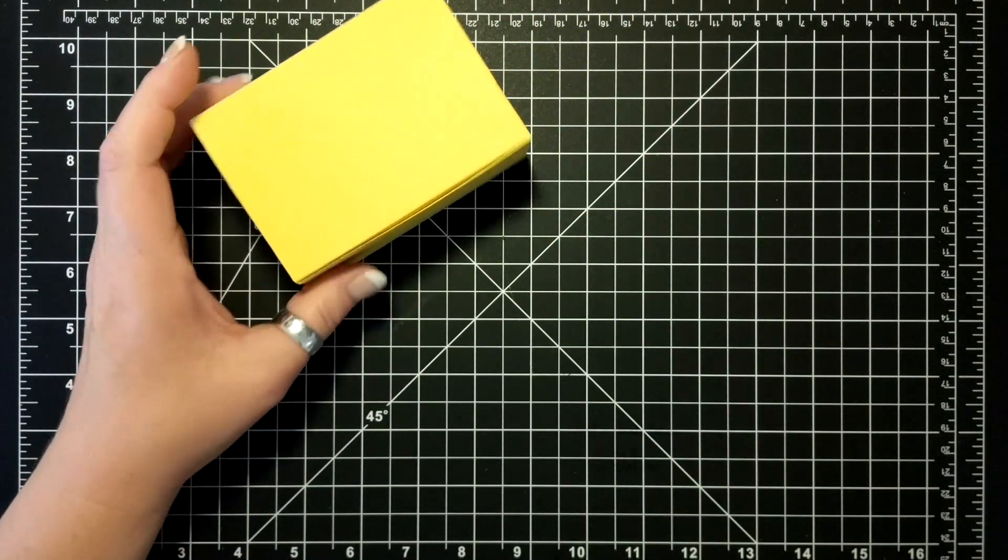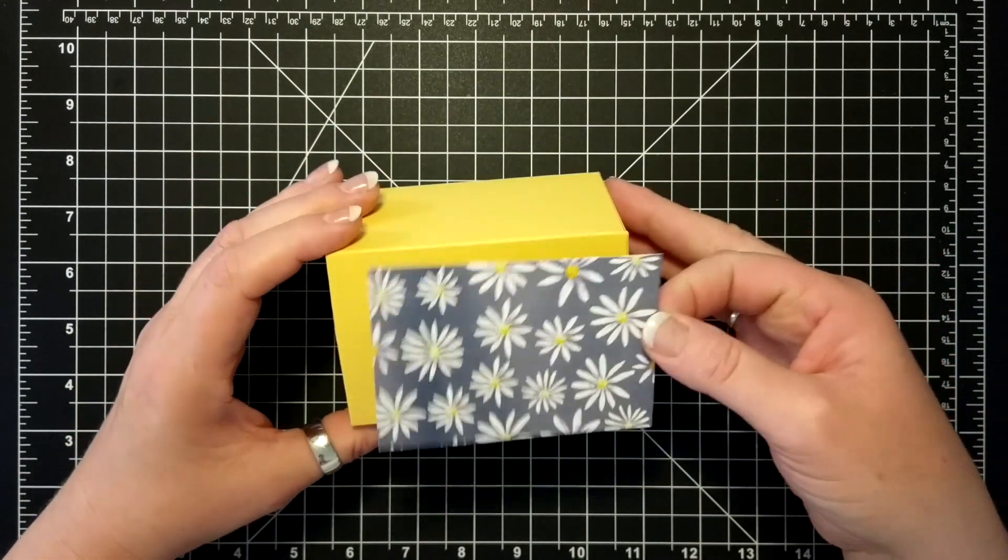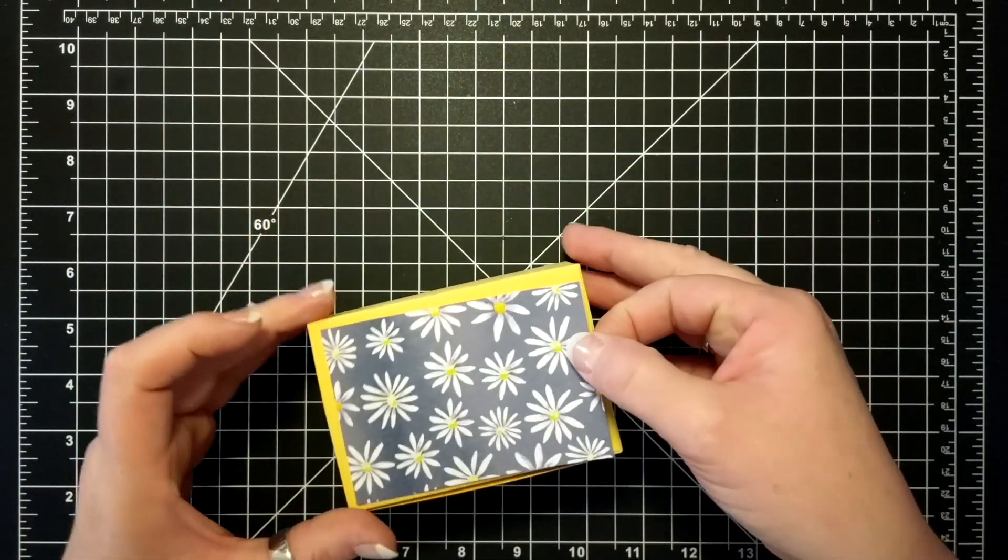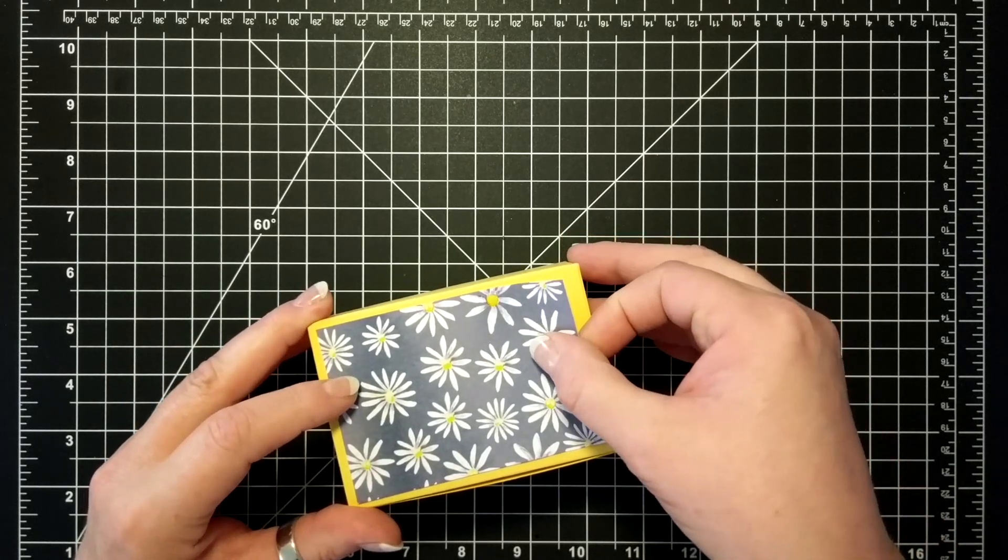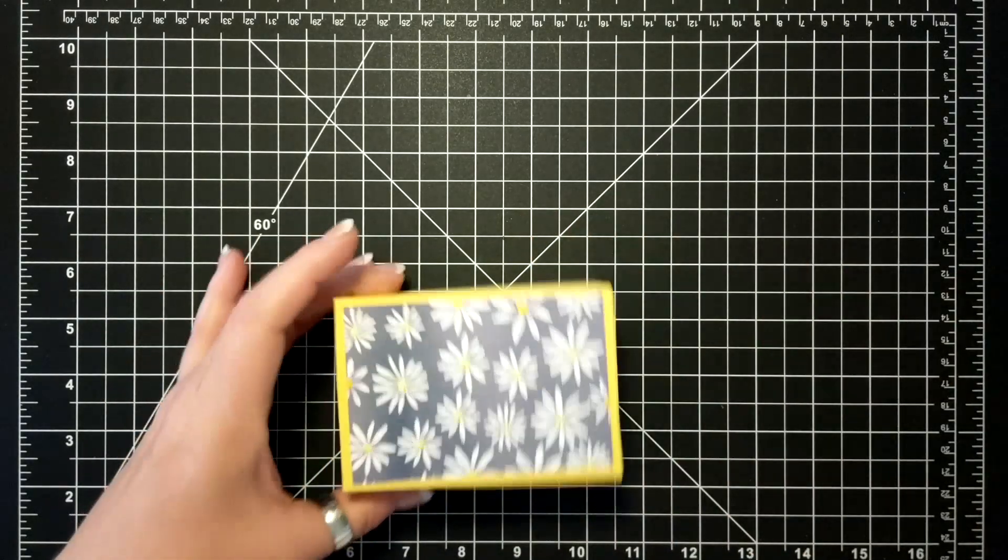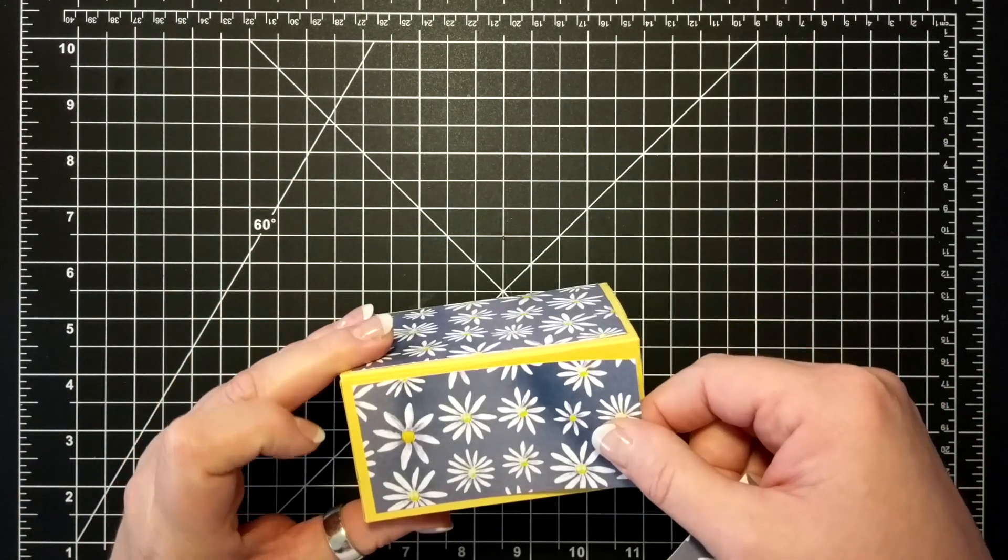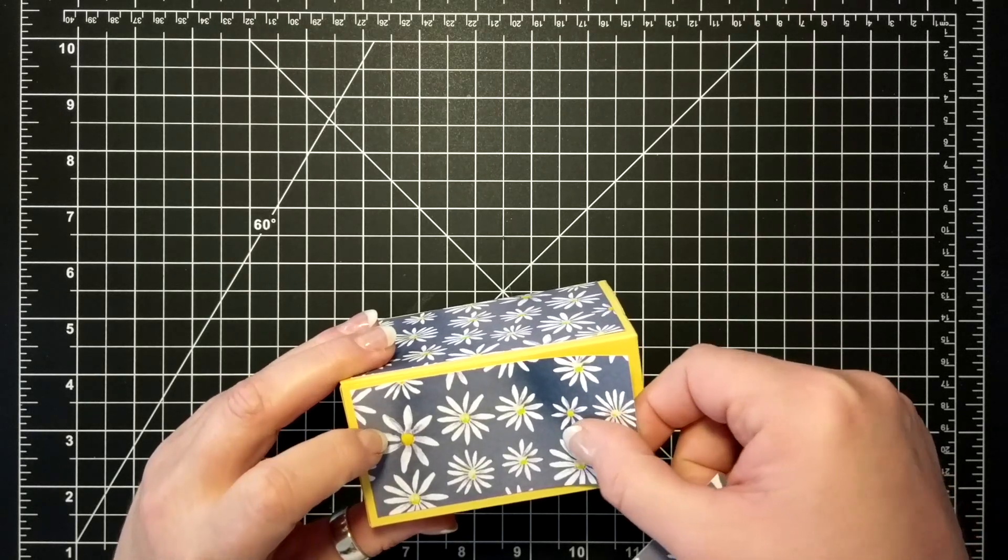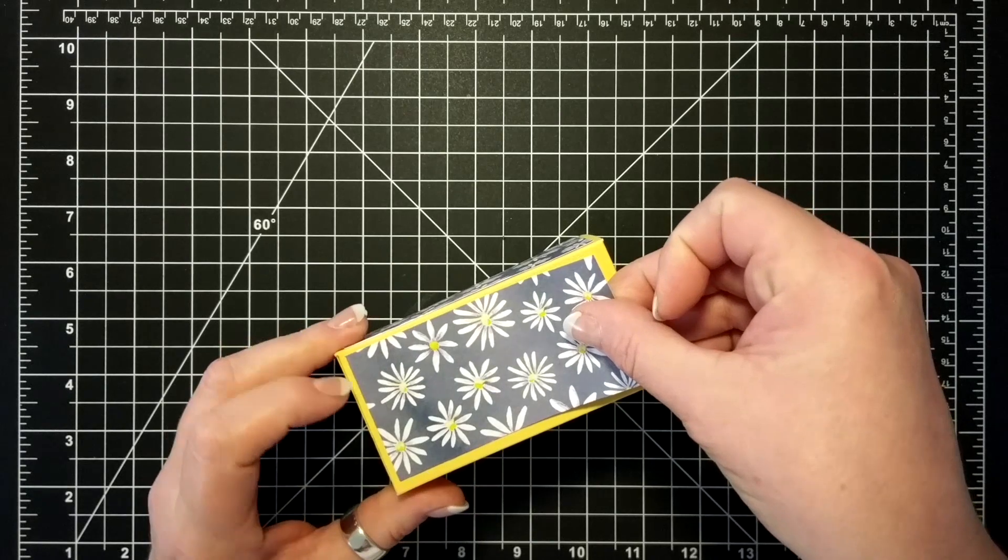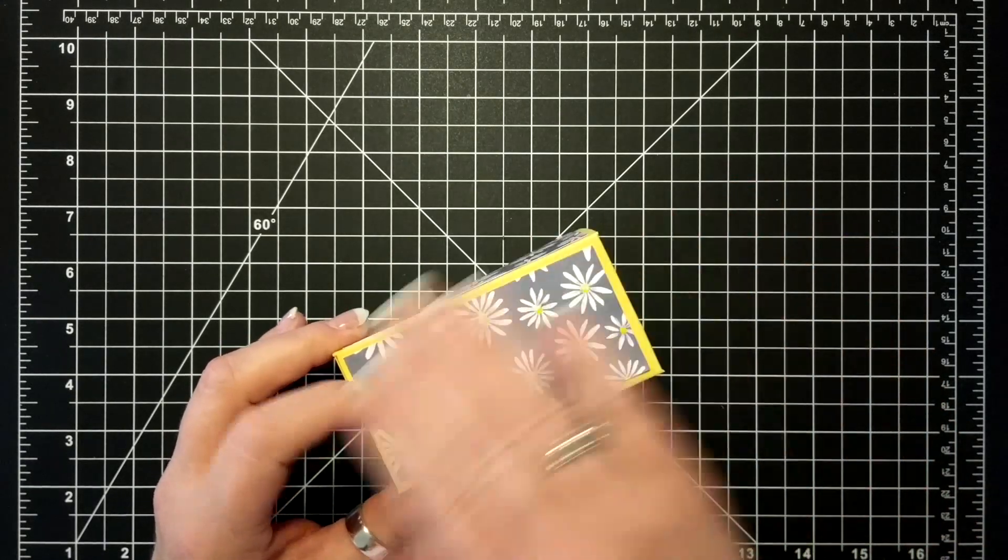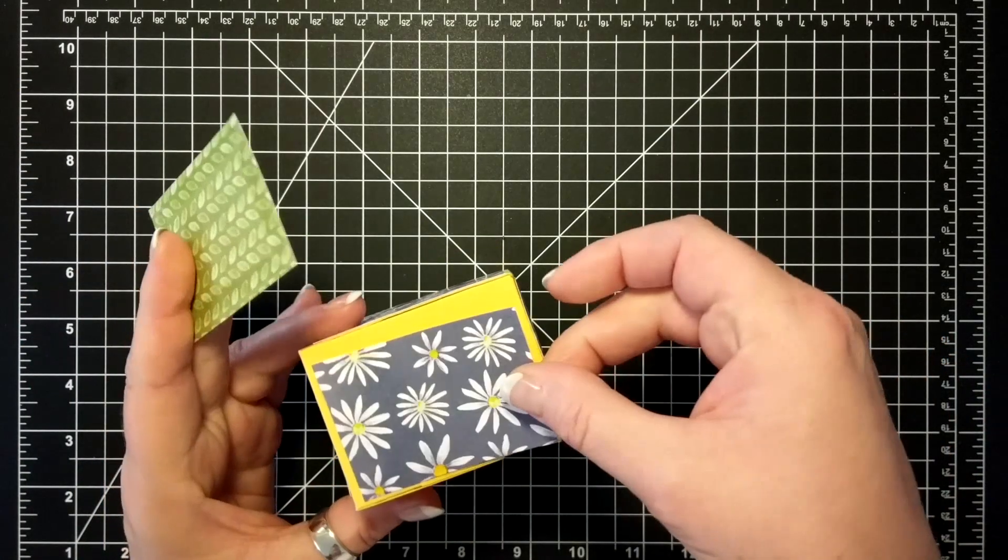Real quick, right? So for a designer series paper, the lid is two and three quarters by four. The front and the back is two and three quarters. No, two by four. And the sides, two and three quarters by two.